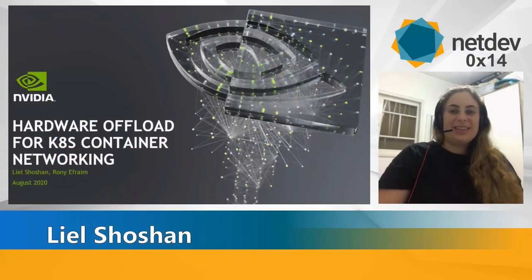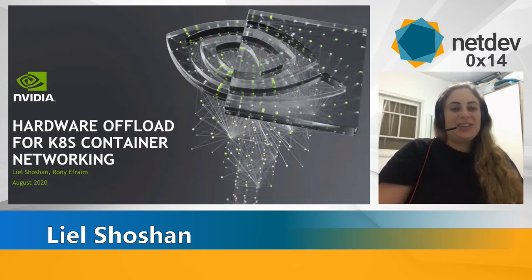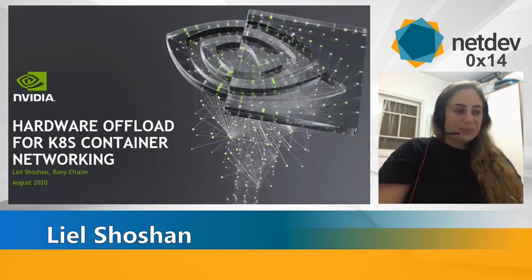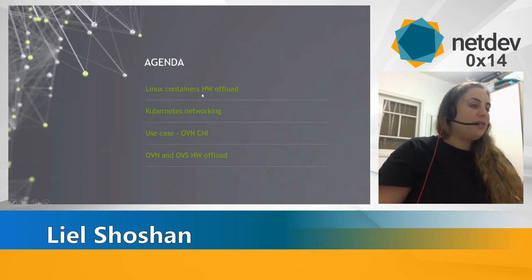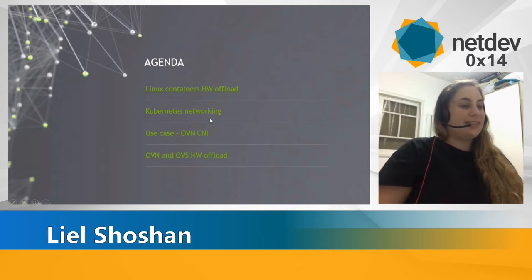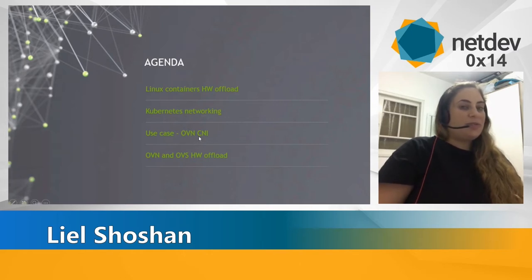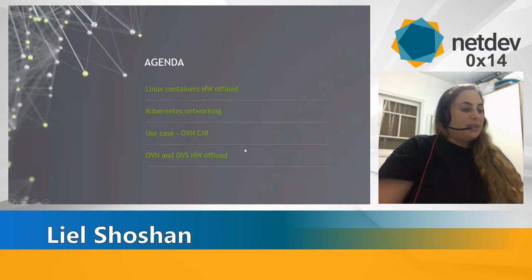Hi, my name is Liel. I'm a software architect at Mellanox NVIDIA, and today I'll discuss hardware offload for Kubernetes container networking. I'll talk shortly about the need for container hardware offload, then do a short overview of the Kubernetes networking model. I'll talk about the use case we chose, which is OVN CNI, and the needed work that needed to be done on OVS and OVN hardware offload.